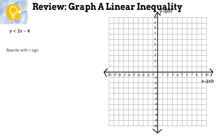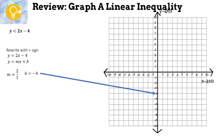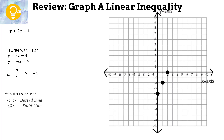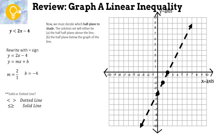Let's graph it. Change the inequality to an equal sign. It's already in slope-intercept form: slope is 2, written as 2/1 (rise over run), and y-intercept is −4. Graph the y-intercept first — put a dot at −4. Follow the slope: rise 2, run 1; rise 2, run 1.